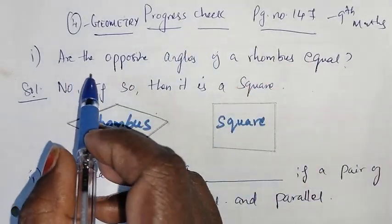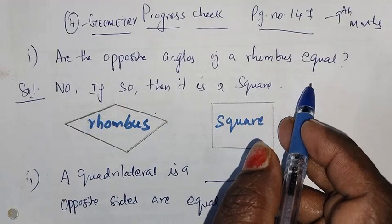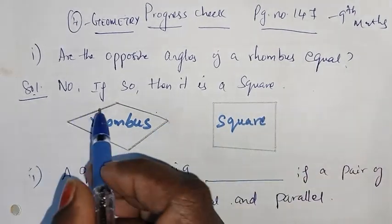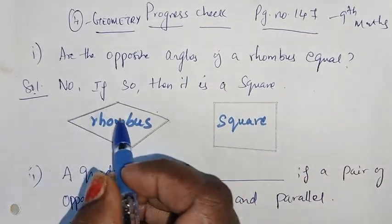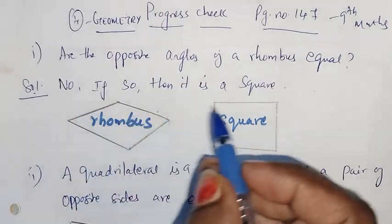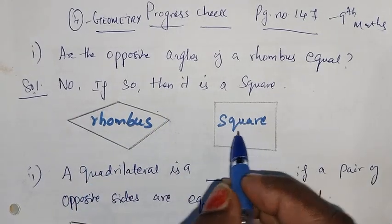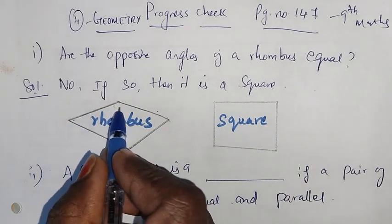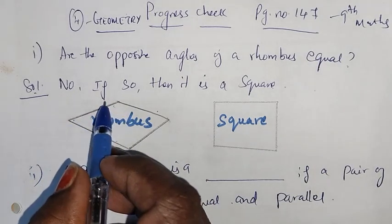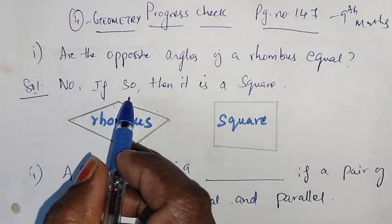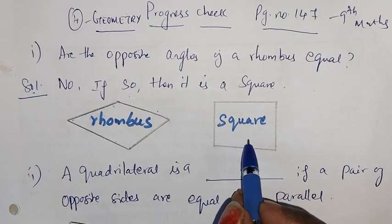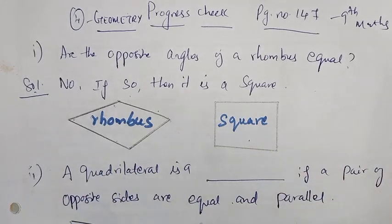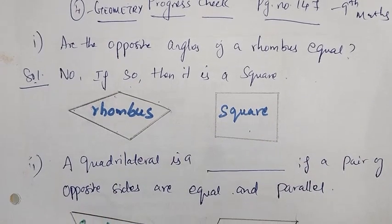First question: are all the opposite angles of a rhombus equal? Opposite angles of a rhombus are not equal. If they are equal, then it is a square. In a rhombus, opposite angles are not equal.